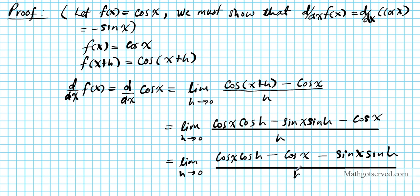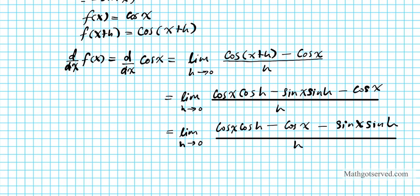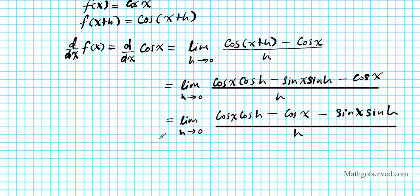Now I'm going to start separating my products in the numerator. From these first two terms right here, I'm going to work on them together and I'm going to work on these two together. These two terms will have a common factor. It becomes the limit as h approaches 0 of cosine x (cosine h - 1) over h minus sine x sine h over h.